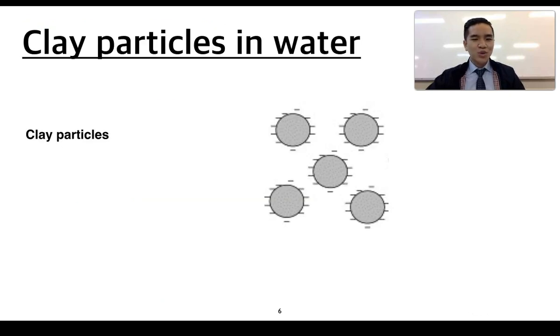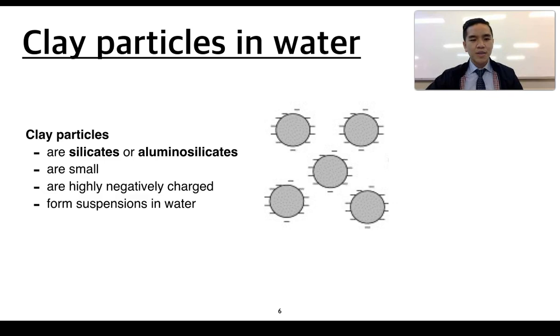One concern with freshwater sources is the presence of clay particles because clays can typically make water turbid or cloudy. Clay particles are typically substances that are made up of silicates or aluminosilicates. This is something that we'll focus on in the next subtopic on 4.3 soils. Because clay particles are small and highly negatively charged, they repel one another and they stay suspended in water. So this gives the appearance of cloudy or turbid water.